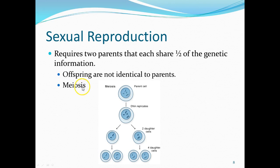Sexual reproduction requires two parents, and the offspring are not going to be identical. That leads to a process known as meiosis — we'll be going into how we create cells that have half the amount of DNA.